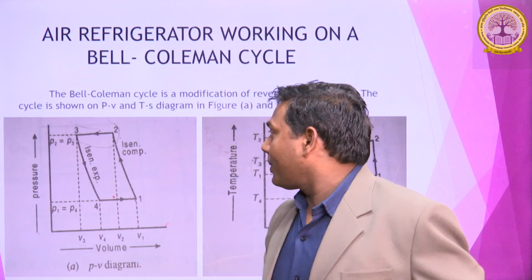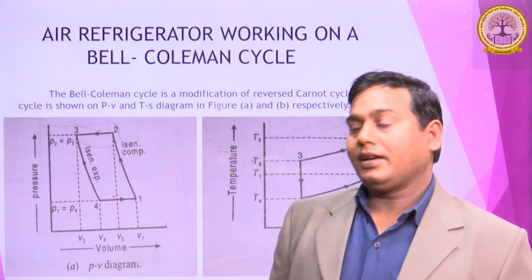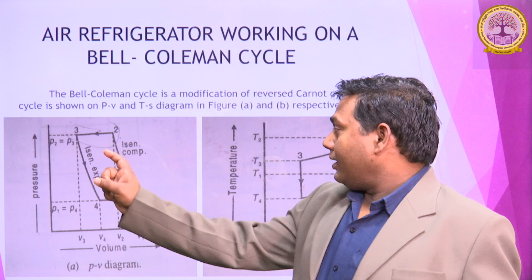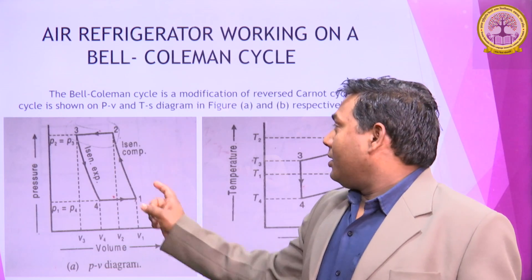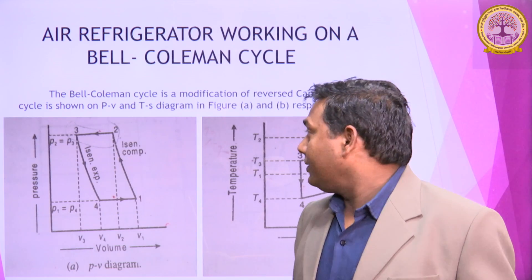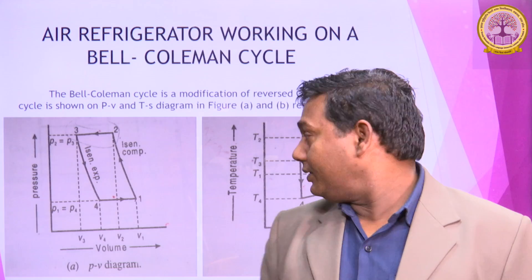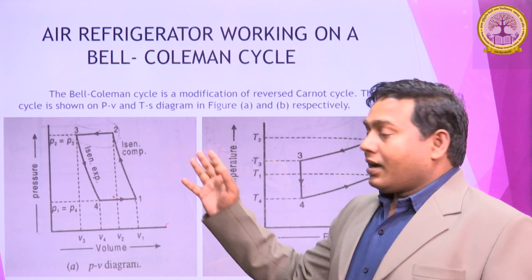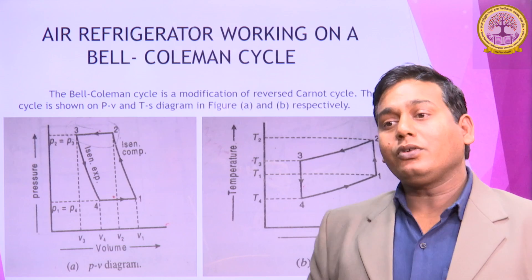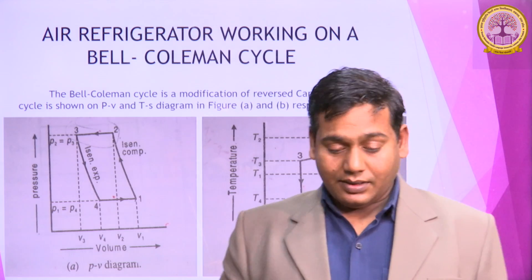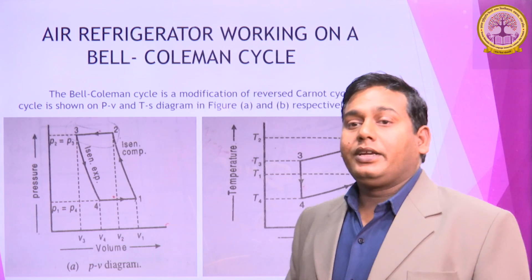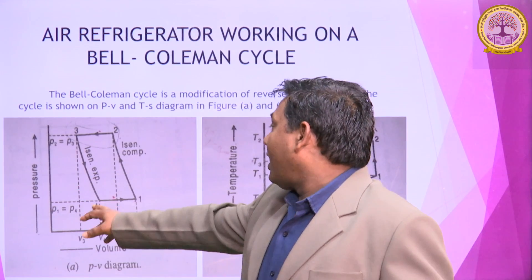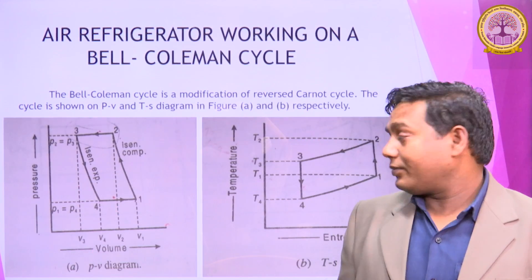In the 2 to 3 process, it is a Constant Pressure cycle. In the Constant Pressure cycle, pressure remains constant and volume decreases. In the Isentropic Expansion Process, volume increases and Delta Q is equal to 0. In the Isentropic Process, DQ is equal to 0. This is the Isentropic Process 4 to 1, and 4 to 1 is also the Constant Pressure Process.